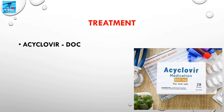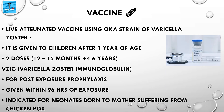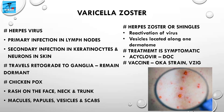Regarding the vaccine, a live attenuated vaccine using the Oka strain of Varicella Zoster Virus is available. It is given to children after one year of age — two doses are given. The first dose is given at 12 to 15 months and the second dose at 4 to 6 years. Varicella Zoster Immunoglobulin is recommended for post-exposure prophylaxis and is given within 96 hours of exposure, preferably within 72 hours.